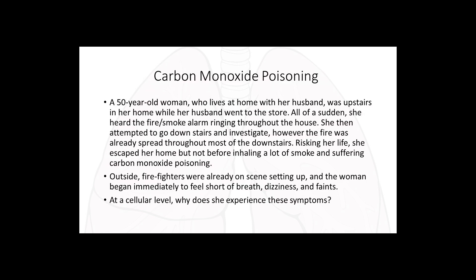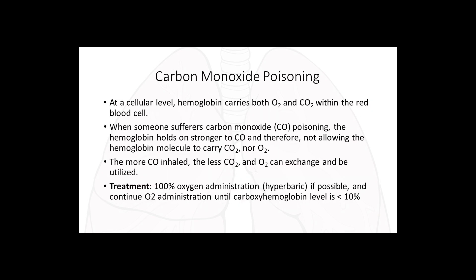Moving on to carbon monoxide poisoning. Here is an example: a 50-year-old woman escaped a house fire but inhaled a lot of smoke and suffered carbon monoxide poisoning. Outside, she began to feel short of breath and dizzy, and she fainted. At a cellular level, why does she experience these symptoms? Carbon monoxide (CO) has a stronger affinity for hemoglobin molecules — or the hemoglobin molecule has a stronger affinity for CO — which does not allow carrying CO2 nor oxygen.